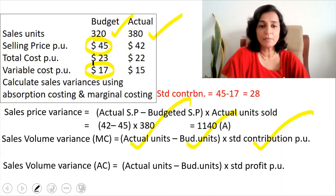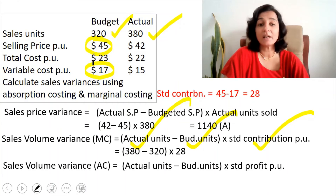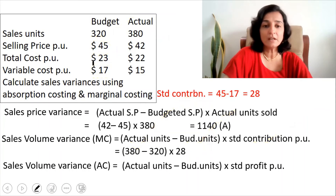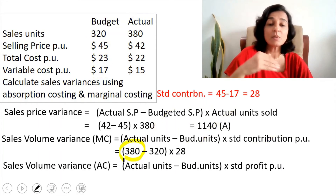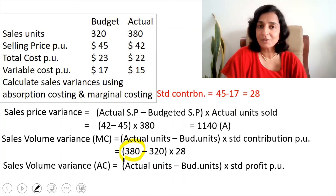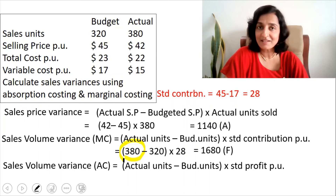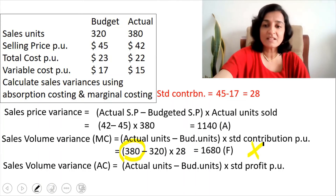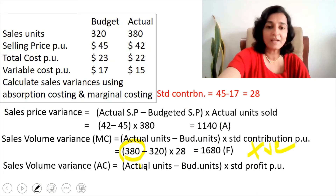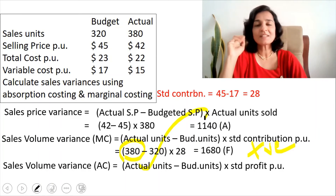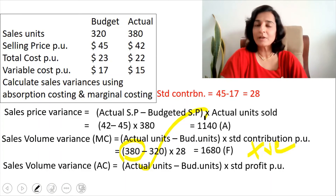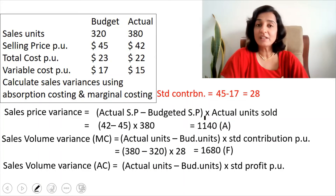Substituting the three figures: 380 minus 320, multiplied by 28. Since actual units are much more than budgeted units, we have a favorable variance of 1,680. A positive result when applying this formula indicates a favorable variance.